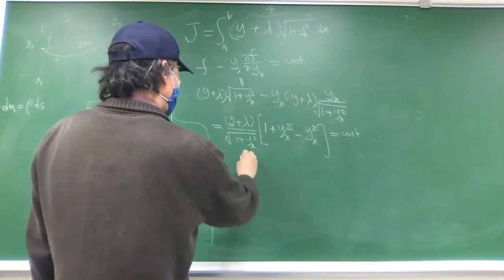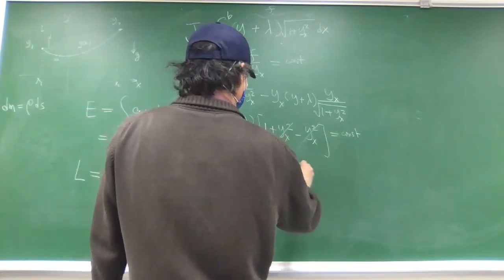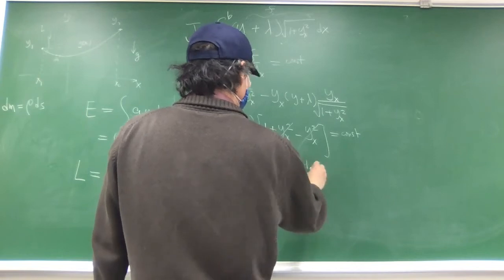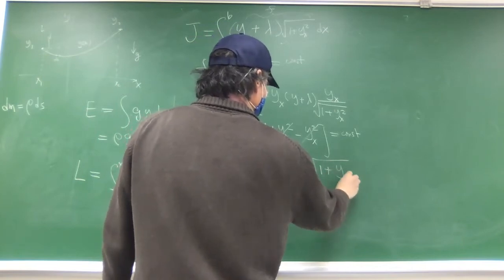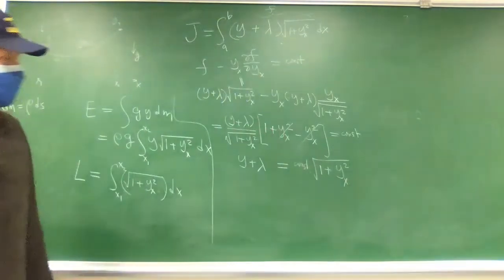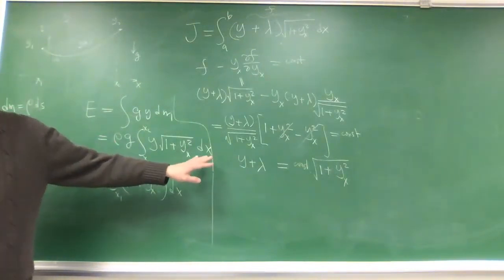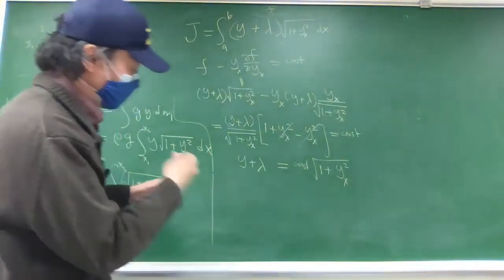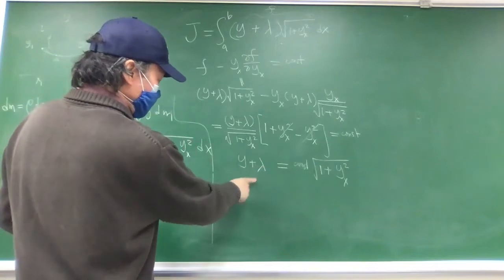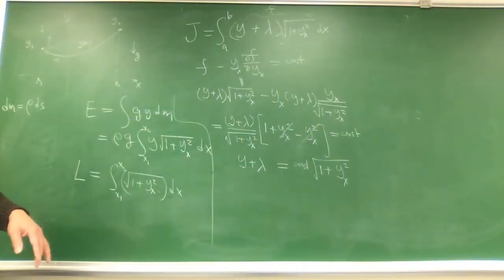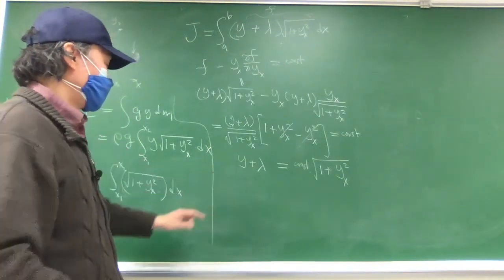Rearranging by multiplying across, we get (y + lambda) equals a constant times sqrt(1 + y_x^2). This is very similar to the soap-free-frame problem — we had exactly the same equation except for this Lagrange multiplier term — though that turns out to be a major difference.